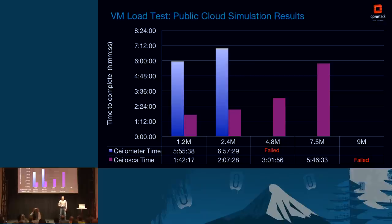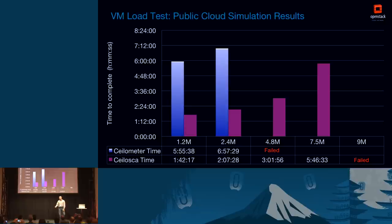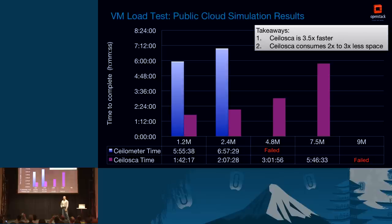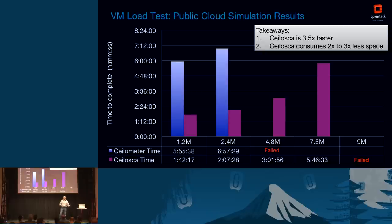These were the results: with CEILOMETER on the VM we couldn't complete 4.8 million measurements because we ran out of space on the 50 GB disk. Time-wise, CEILOMETER was way higher than SILOSCA. SILOSCA eventually failed around 8–8.5 million. The takeaway is that on average SILOSCA is three and a half times faster in consuming data for a public cloud simulation. SILOSCA also consumes between two to three times less storage space — two times with enough metadata to run a traditional build, or three times if you use very minimal metadata.